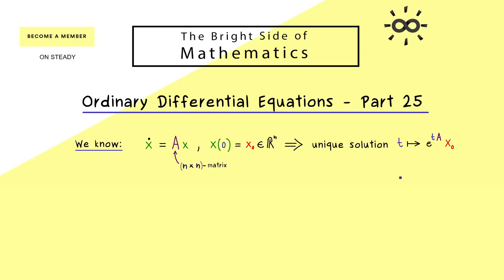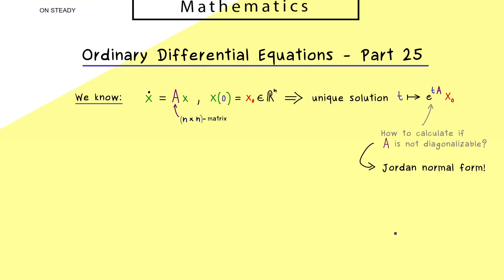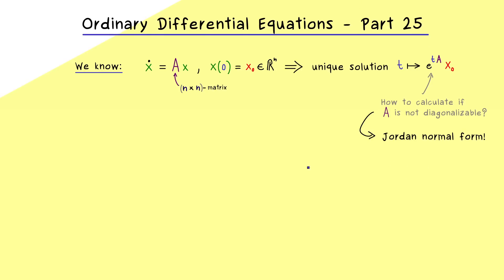We already learned in the last video that if matrix A is diagonalizable, then the matrix exponential is quite easy to calculate. The general question is: how can we calculate the matrix exponential if A is not diagonalizable? It's always possible by using the so-called Jordan normal form. I have discussed this extensively in my abstract linear algebra course, so you can check that out. In this video series we will just apply the Jordan normal form, but first I want to show you an example.